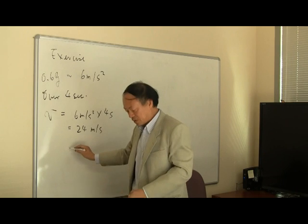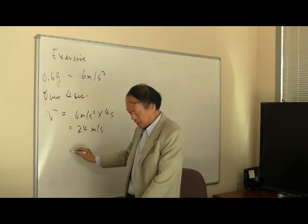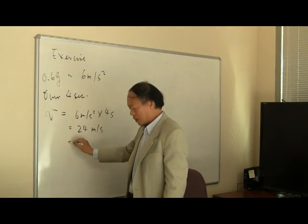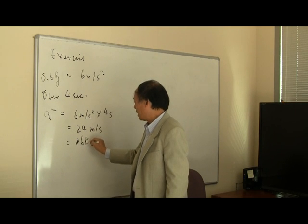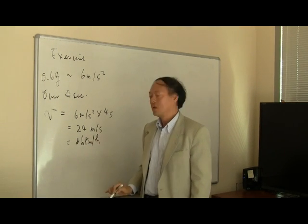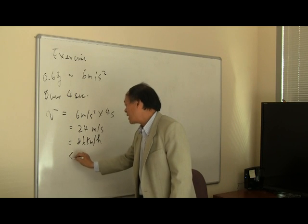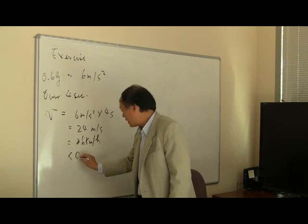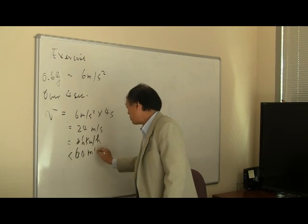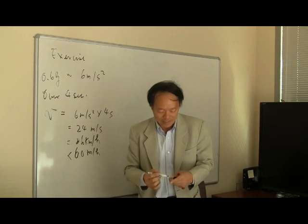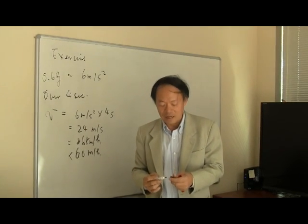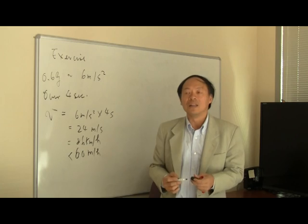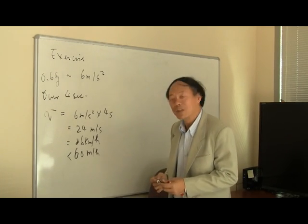And that actually translates to 86 kilometers per hour, which roughly is slightly less than 60 miles per hour. So as advertised, the Tesla in fact can accelerate from 0 to 60 in less than 4 seconds. Pretty fast car.